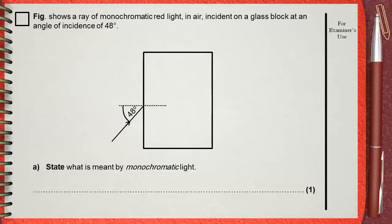So, monochromatic light is light of single wavelength, or you can say light of single frequency.